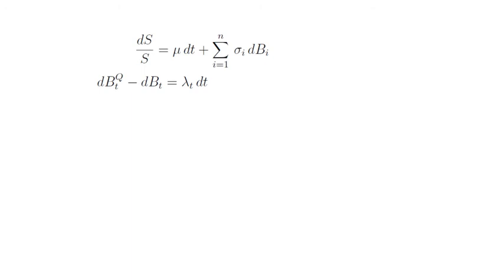So hence we just take the P representation of the SDE for the stock return and rewrite that under the risk-neutral probability measure. Here is how we do that. We simply swap dB with the expression dB^Q minus λ dt. And we do that for all n shocks.